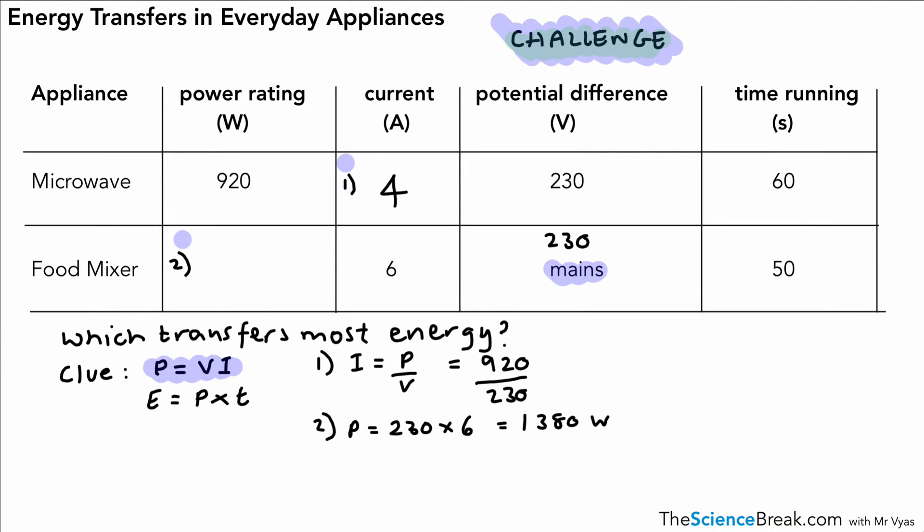Okay, now what about the energy transferred? Well, this is where we use our second equation to work out which transfers the most energy. We use a second equation, and that's power times time. So now it's slightly more straightforward once we've done some other working out there. So for the first one, let's put the answer in there, the power rating for the food mixer.